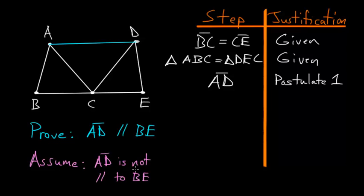And if AD is not parallel to BE, that means that some other line is, which we can construct because of Book 1, Proposition number 31. We can draw a line through the point A that's parallel to the line BE.